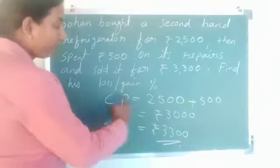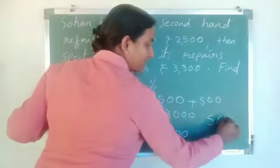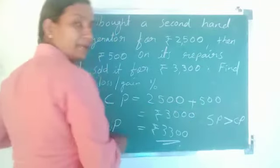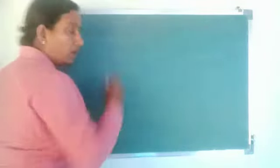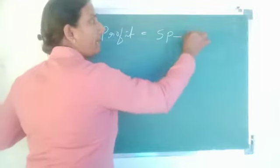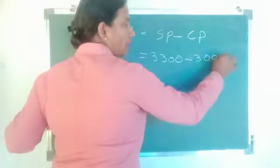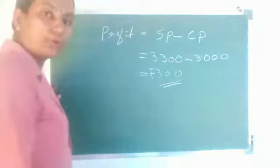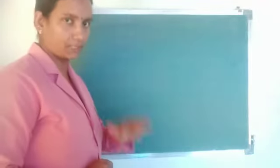First we need to identify whether this is a loss or gain. CP is 3000 and SP is 3300, that means SP is greater than CP. If SP is greater than CP, the business is profit. So profit equals selling price minus cost price — SP 3300 minus CP 3000 — so profit is 300.